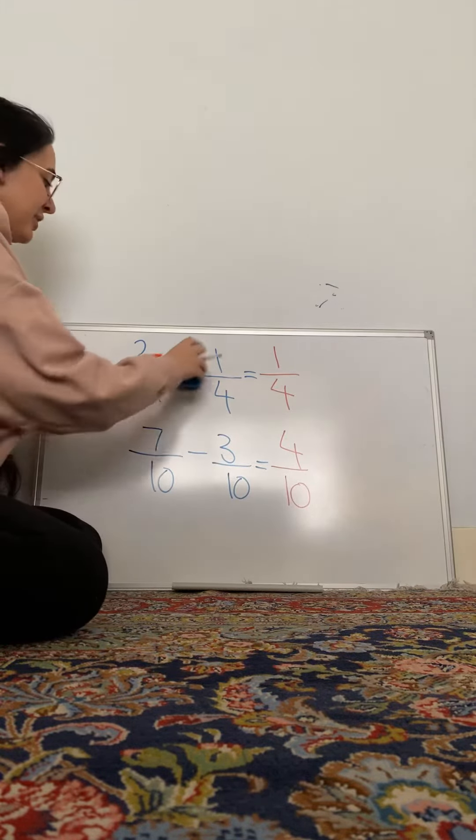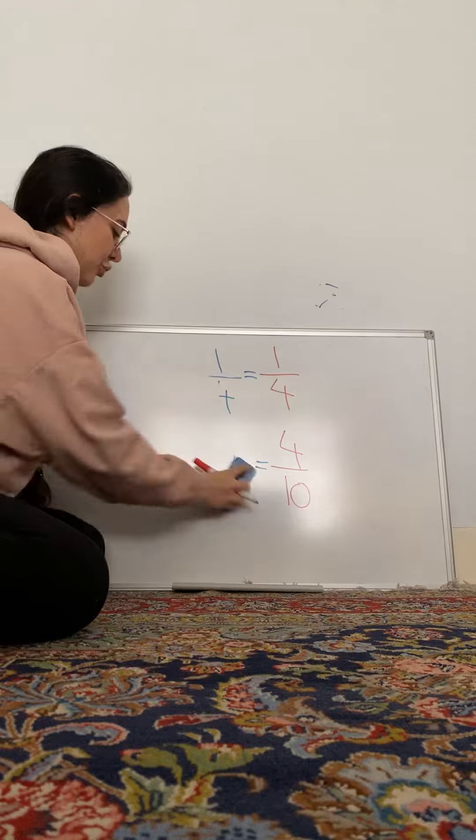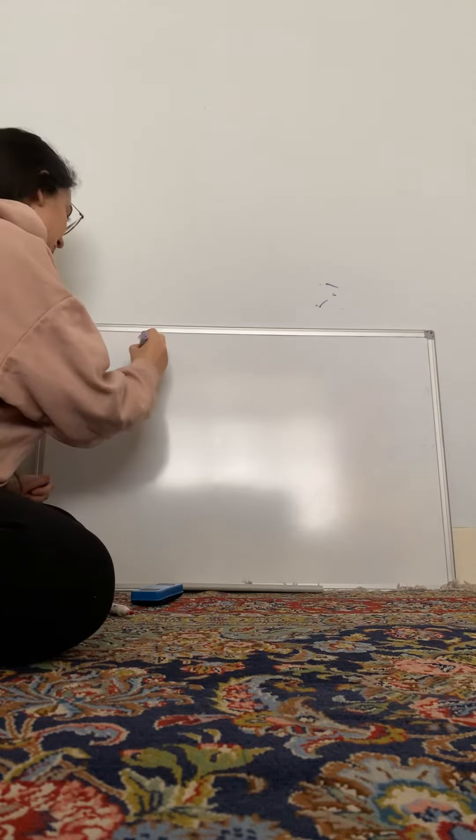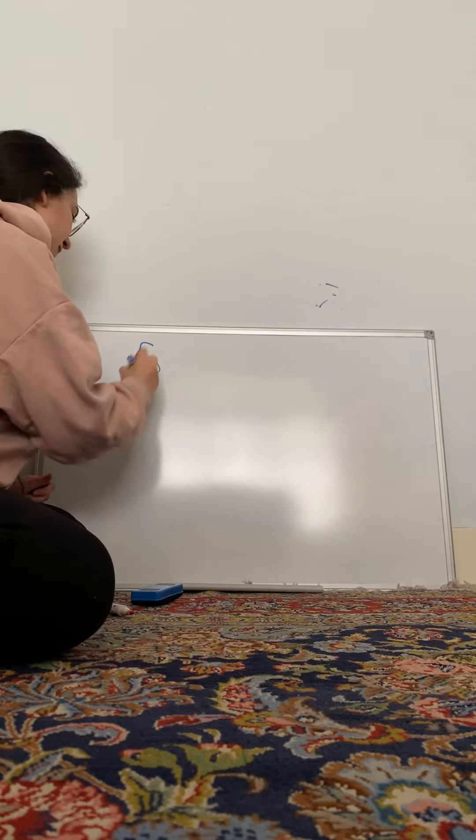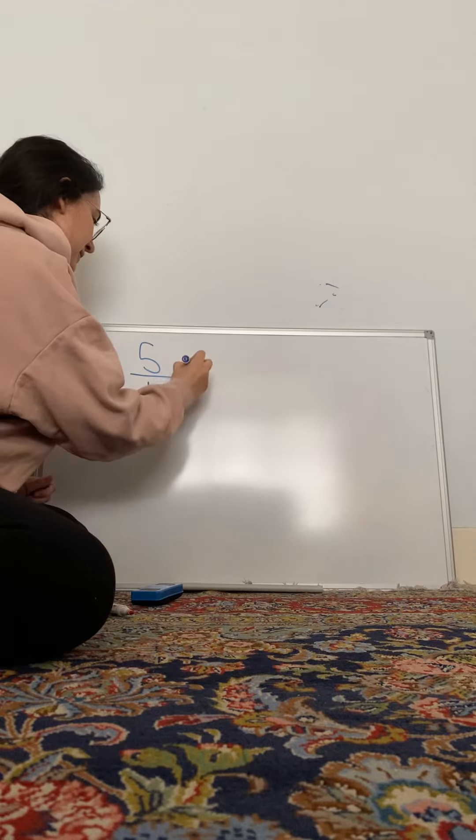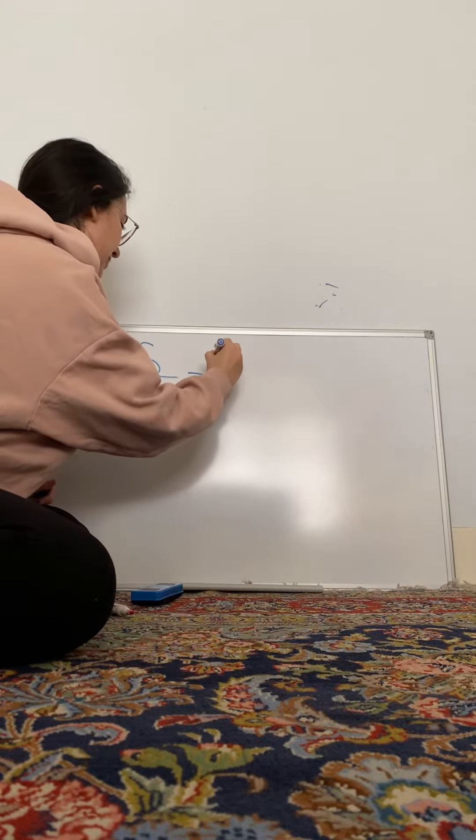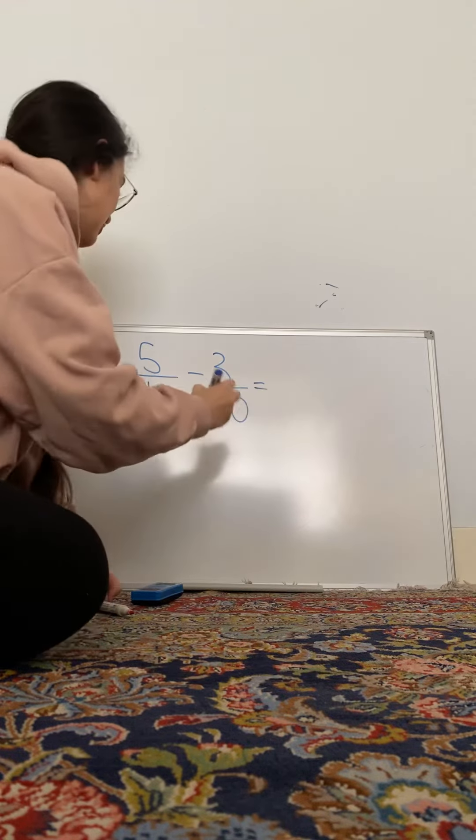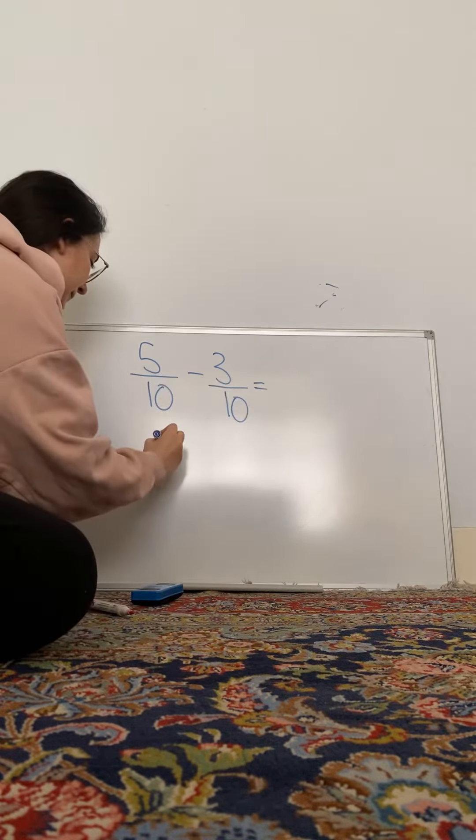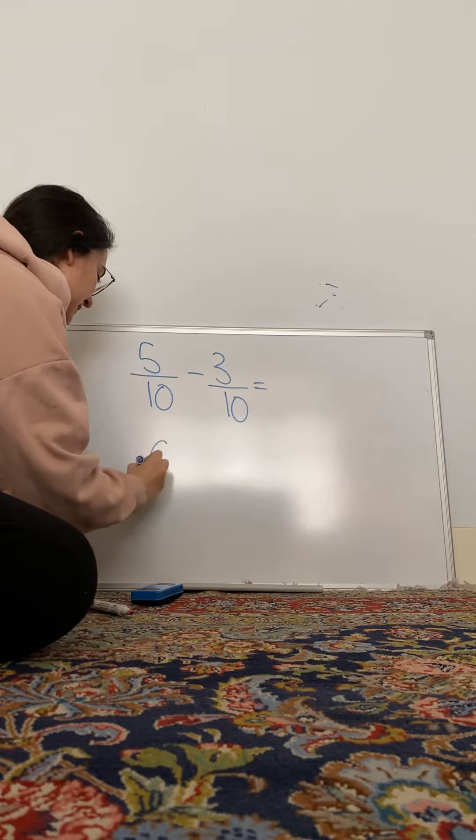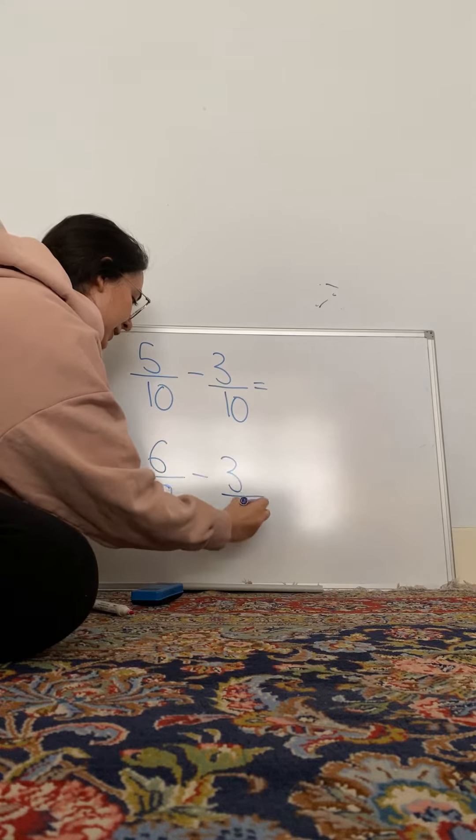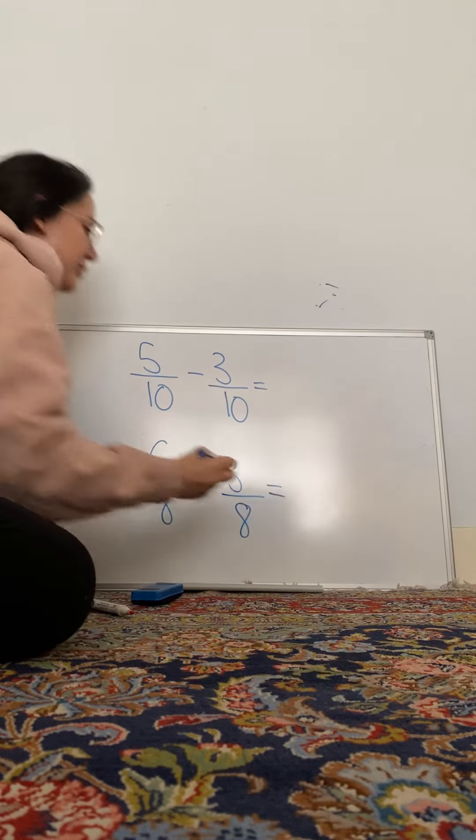Now let me put an example on the board for you to do by yourselves. So let's do 5 tenths take away 3 tenths, and we'll do 6 eighths take away 3 eighths. Try those 2 by yourself.